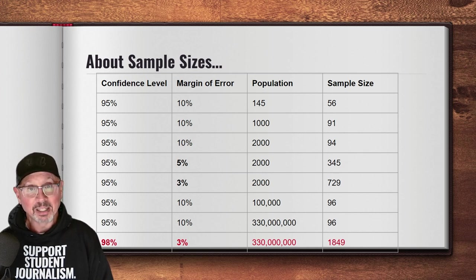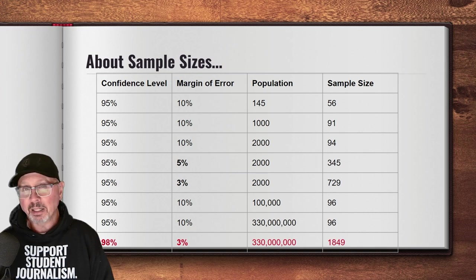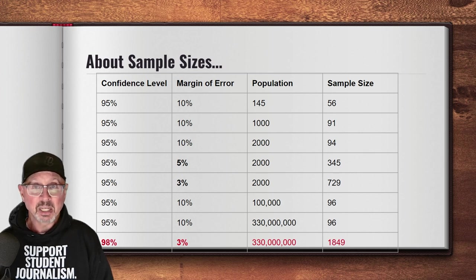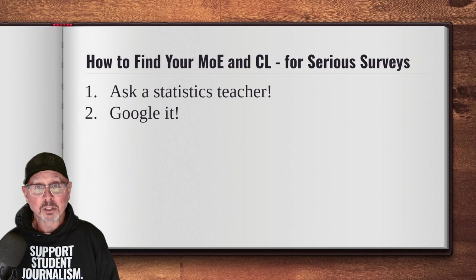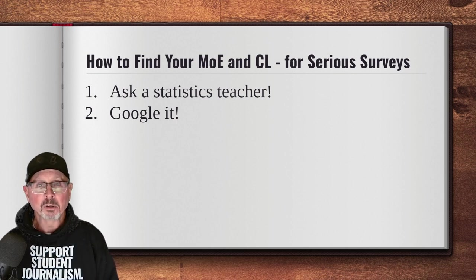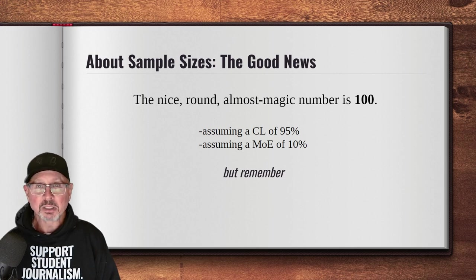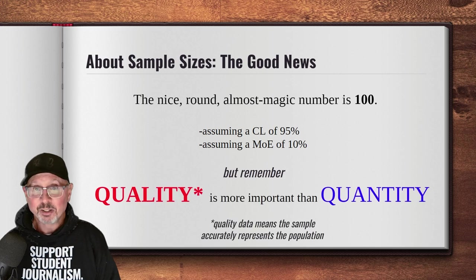It's counterintuitive, but when you see major polls on something like realclearpolitics.com, you'll often see sample sizes of closer to 2,000. They do that mainly to lower the margin of error, and also because a bigger sample lets you subdivide — for example, comparing Republicans and Democrats, or men and women, or various age groups. To find your margin of error and confidence level, my first recommendation is to ask a good statistics teacher. You can also search the web, but don't settle for the first thing you find — look a little deeper so you really understand what you're talking about. About 100 respondents is good as long as you're okay with a confidence level of 95%, which is pretty common, and a margin of error of 10%, which is a little high but still acceptable. But remember, you need to work to get quality data.